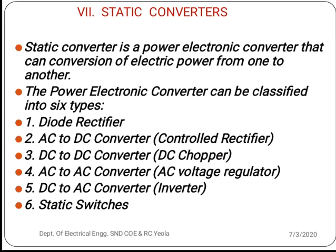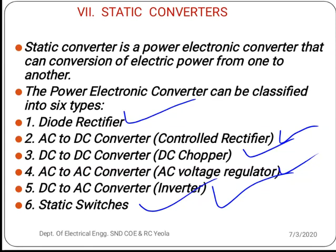Now we discuss power electronic converters, which perform conversion of electrical power from one form to another. Power electronic converters can be classified into six types: first, rectifier — converts AC to DC (uncontrolled); second, controlled rectifier — also AC to DC converter; third, DC chopper — converts fixed DC to variable DC; fourth, AC to AC converter, also known as AC voltage regulator; fifth, DC to AC converter, also known as inverter; and sixth, static switch.